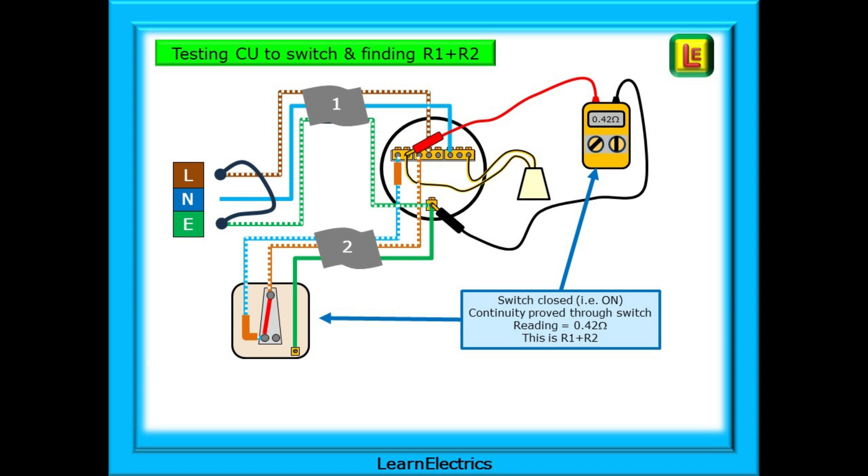Now we're testing cable number two from the red probe along the blue switch conductor through the switch and back along the brown switch wire. Then through the middle live loop terminal and along the brown in cable number one to the consumer unit. Along the link to the earth conductor and back to the earth terminal along cable number one. If the meter displays an acceptable reading, continuity is proved and this is also the R1 plus R2 reading for this circuit.